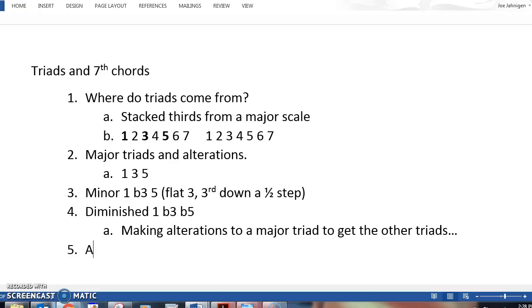There's a fourth kind called the augmented triad, and that is a 1, a 3, and a sharp 5. What I mean by sharp 5 is you raise the fifth a half step.